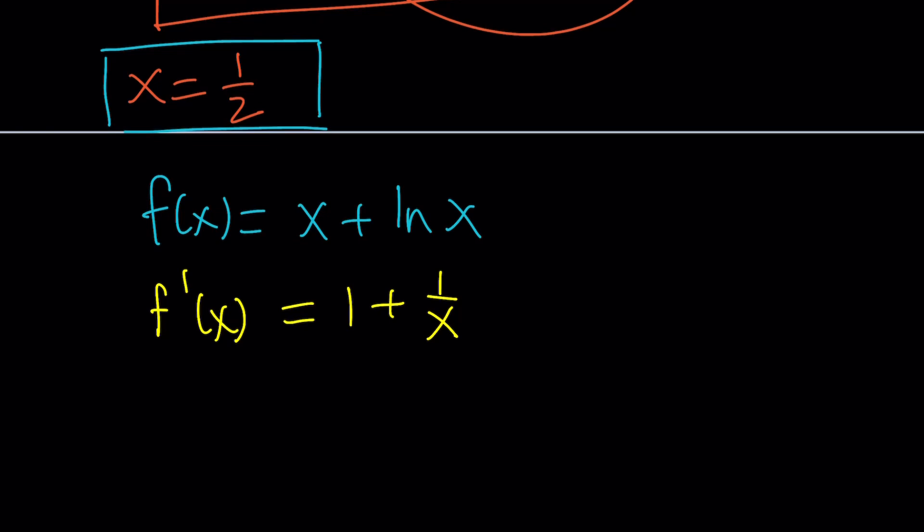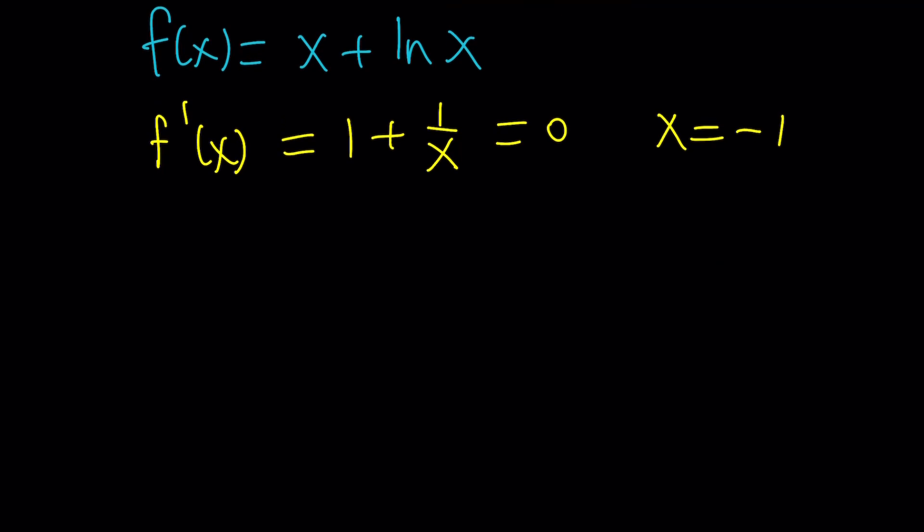Most of the time we try to set it equal to zero, right? If you set this equal to zero you're going to get x equals negative 1, so that seems to be a critical point for this function which may mean the function has a horizontal tangent, a maximum or a minimum at that point. But as you'll see this is a little problematic.